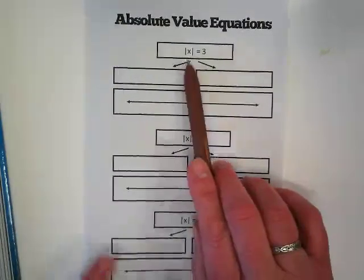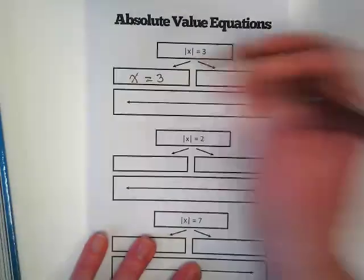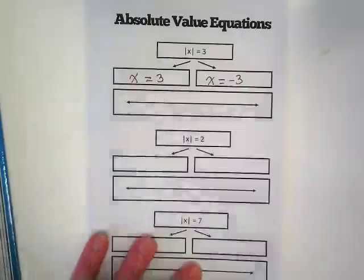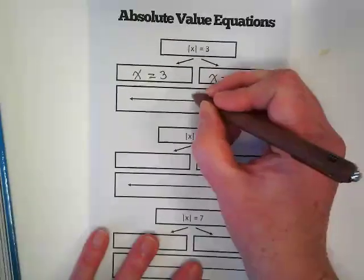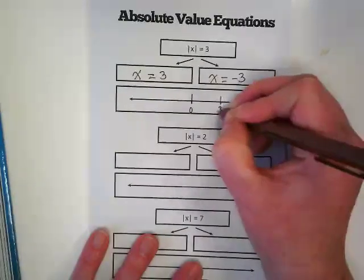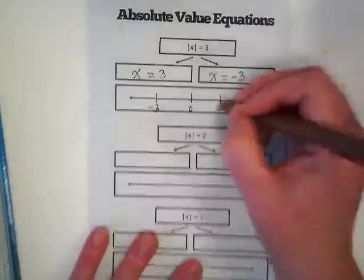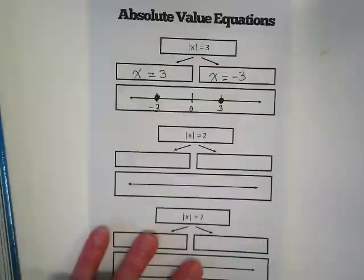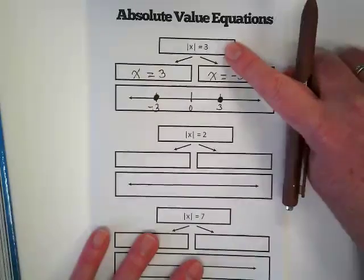Once the absolute value is isolated, you rewrite it with a positive version and a negative version. And what would that look like on a number line? We're going to fill those in with solid dots, showing that only negative 3 and positive 3 could make this absolute value true.